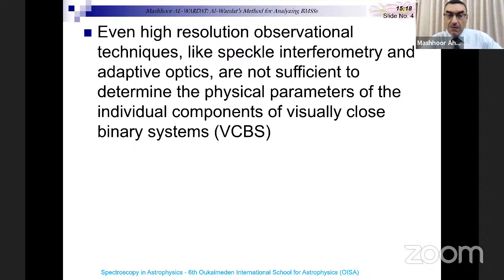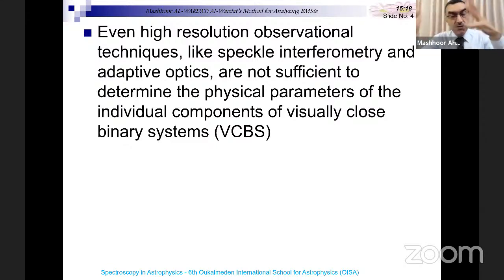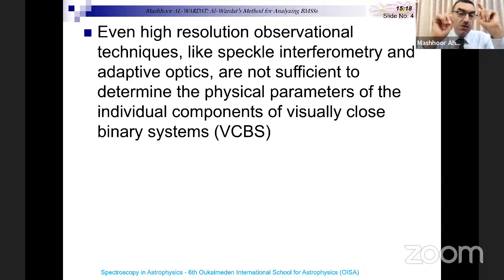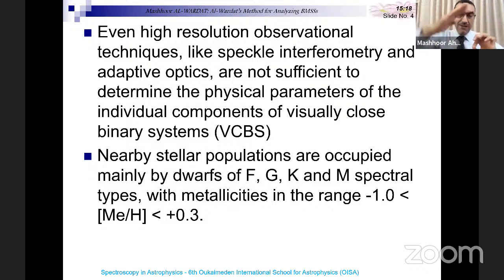Even high-resolution observation techniques like speckle interferometry and modern adaptive optics, now implemented in several mid-sized telescopes, are not sufficient to determine the physical and geometrical parameters of individual components of visually close binary systems. These systems are so close that you cannot see them as two stars even with big telescopes — you see only one. With high-resolution techniques, we can detect the duplicity and measure the delta magnitude, the separation between them, and the tilt angle.